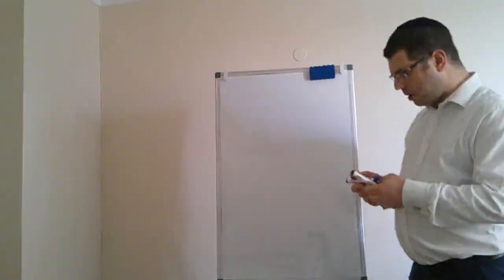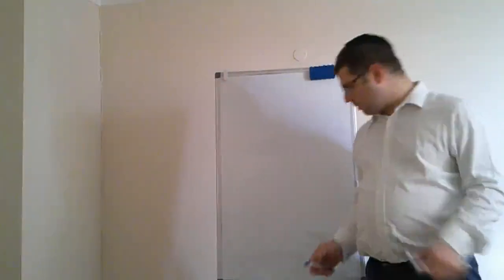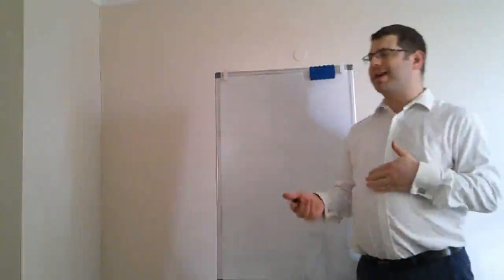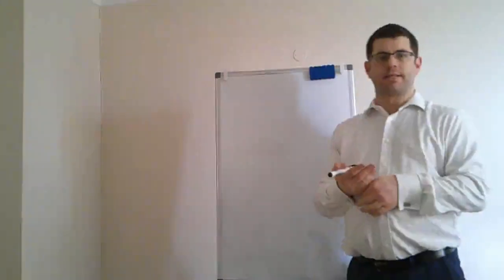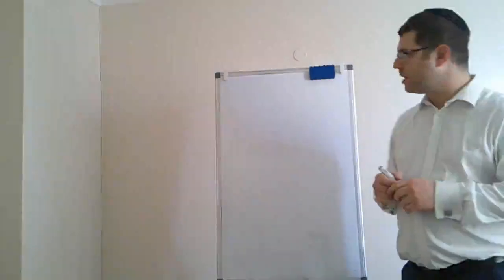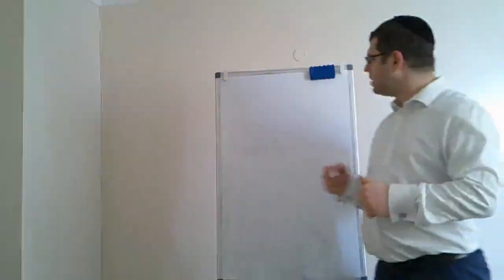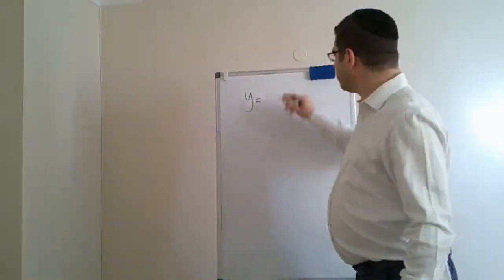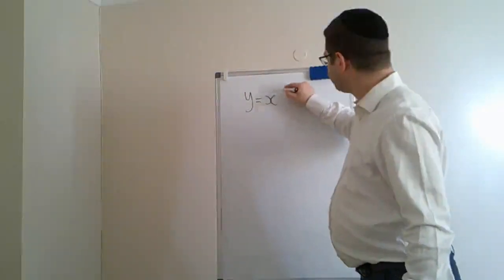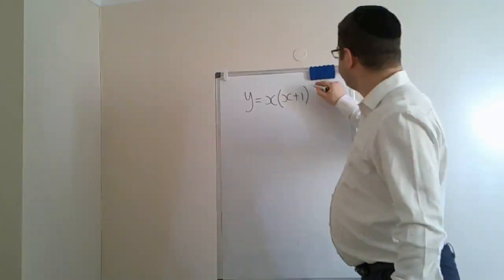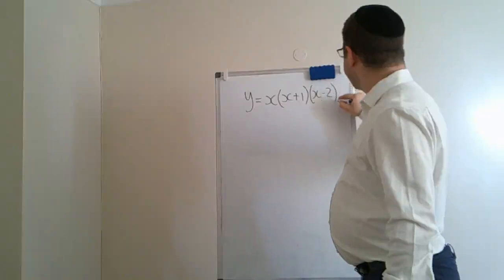Following on from the last video on integration, where we discussed what happens when an area is below the x-axis — it provides a negative result when we do the integration — I'd like to look at this example together: y is equal to x times (x + 1) times (x − 2).